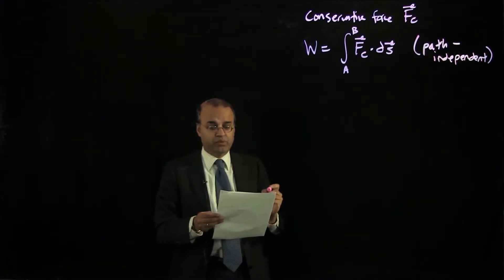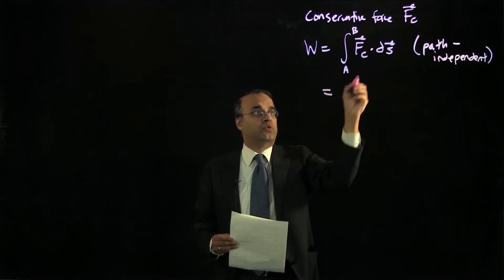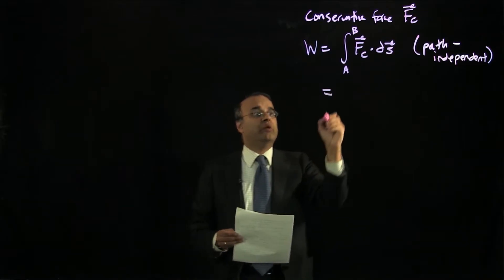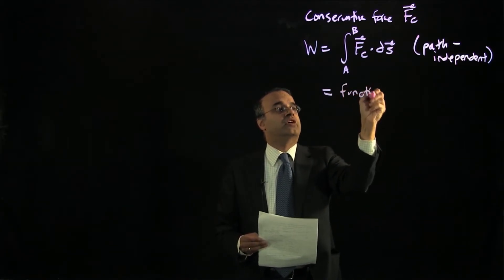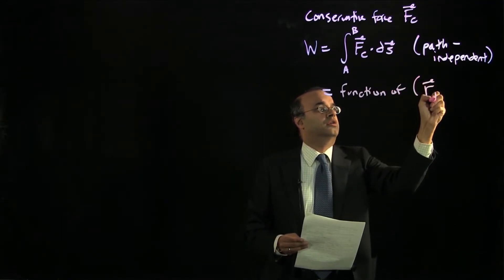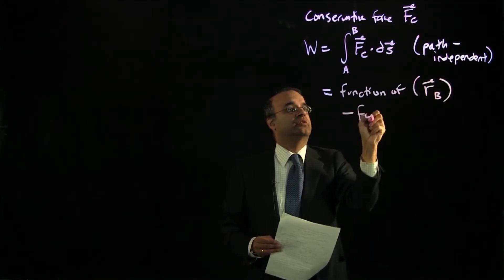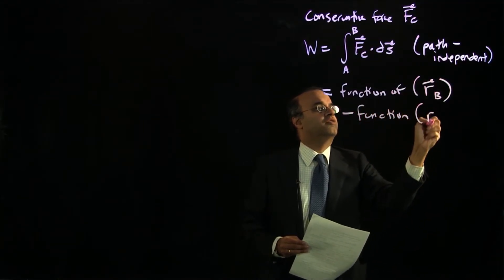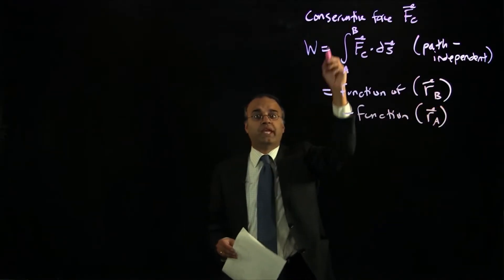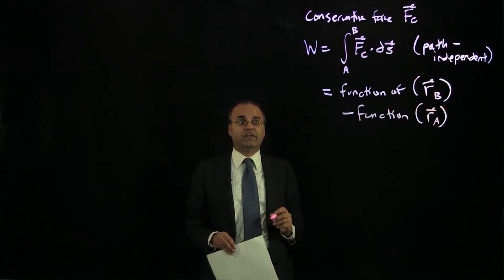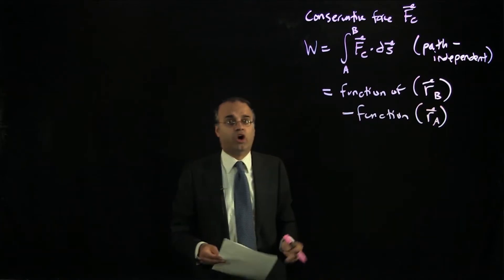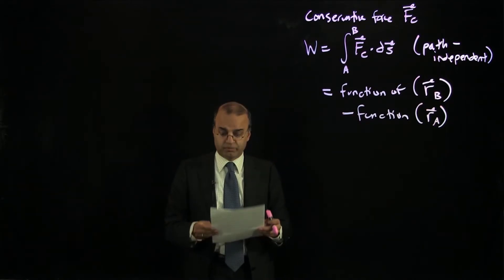Since it depends only upon the endpoints, and since it's going from point A to point B, this integral must be equal to some function of the final point — some function of R sub B — minus some function of the initial point R sub A. It's going to be equal to some function of R_B minus some function of R_A, since the integral depends only upon the endpoints.